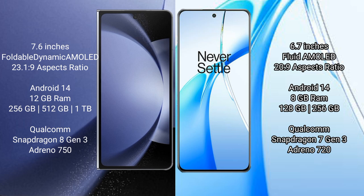Samsung Galaxy Z Fold 6 comes with 12GB RAM, 256GB, 512GB, or 1TB internal storage, and a Qualcomm Snapdragon 8 Gen 3 processor. OnePlus Nord CE 4 comes with 8GB RAM, 256GB internal storage, and a Qualcomm Snapdragon 7 Gen 3 processor.